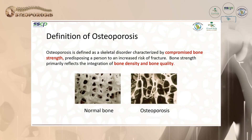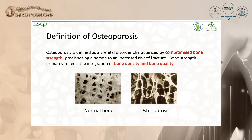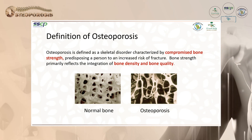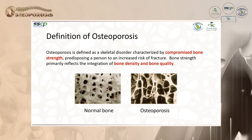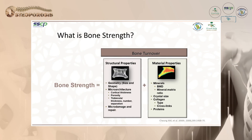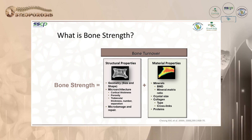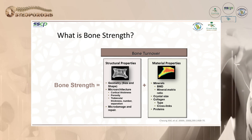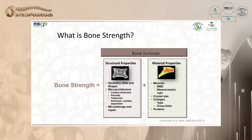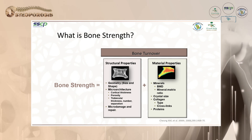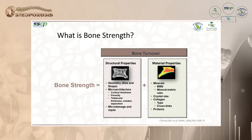Osteoporosis is a skeletal disorder characterized by compromised bone strength, predisposing a person to increased risk of fracture. Bone strength primarily reflects an integration of bone density and bone quality. Bone strength combines structural properties — geometry, size and shape, microarchitecture, cortical thickness, trabecular thickness, number and separations — along with micro damage and repair.